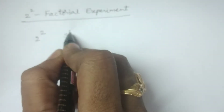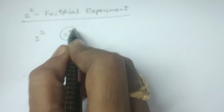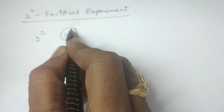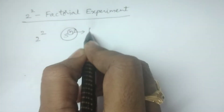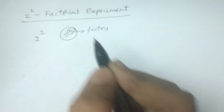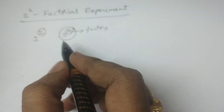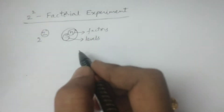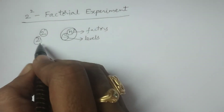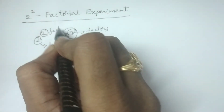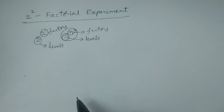Here I should explain s power n, where n indicates the number of factors. So 2 indicates there are 2 factors. And s indicates levels — there are 2 levels and 2 factors. This is the 2 square factorial experiment.